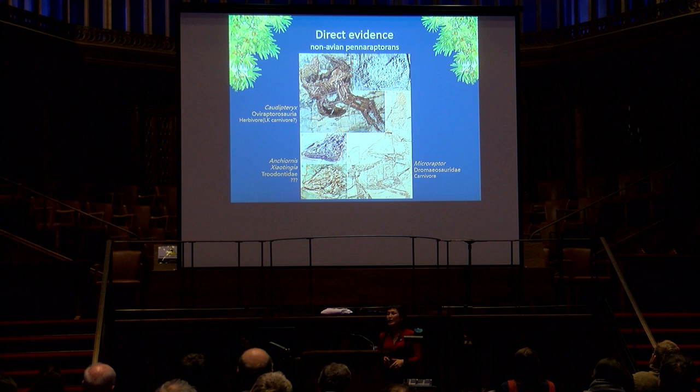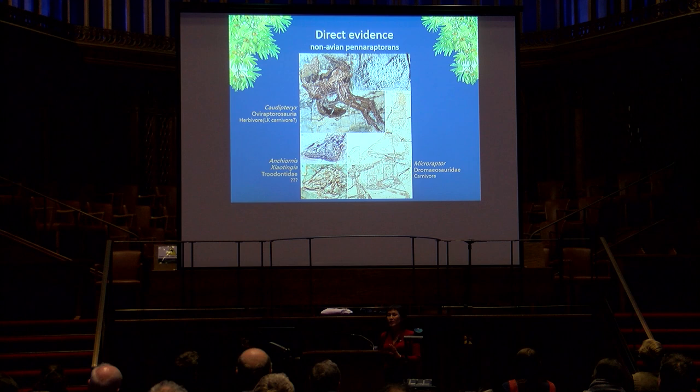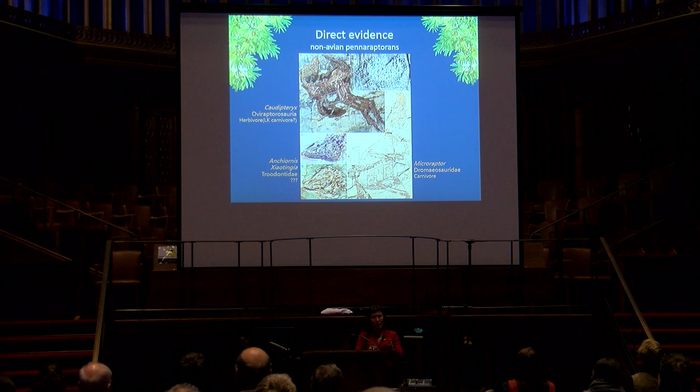These specimens also tell us that like living carnivorous birds, Microraptor most likely ate its prey whole or in very large chunks. Until recently, we had no evidence of what troodontids were feeding on. Troodontids are most likely the clade most closely related to birds. However, even in the absence of direct evidence, we noticed a huge disparity of tooth morphologies that hinted at a disparity of dietary niches.